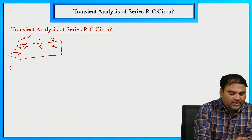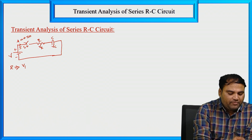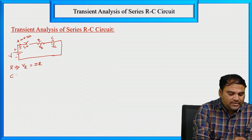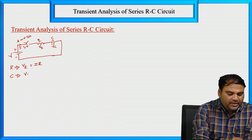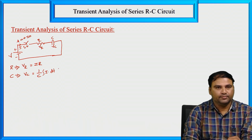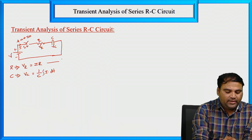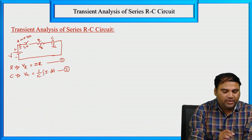Now write the voltage equations. At R, VR equal to I into R — this is equation 1. At C, VC equal to 1 by C integral of I dT — this is equation 2.